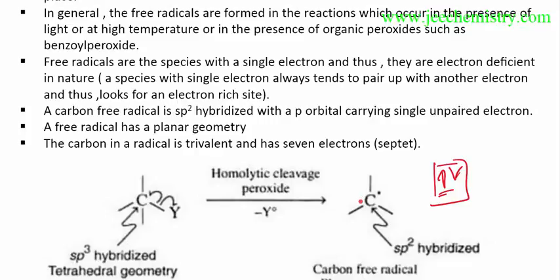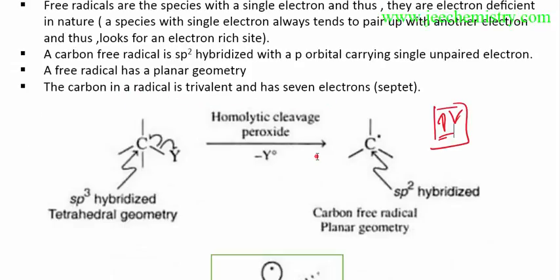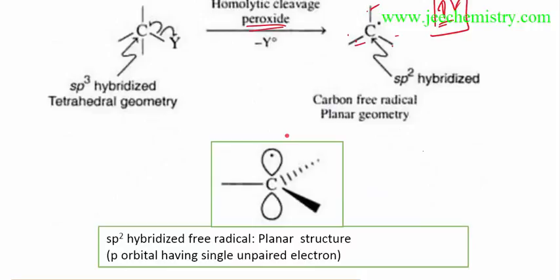Free radicals have planar geometry. The carbon in a radical is trivalent, with seven electrons — sp2 hybridized. This is shown in the three-dimensional view using wedge and dash notation. The p orbital contains the single unpaired electron. An external condition is required for homolytic cleavage to occur and form the free radical.